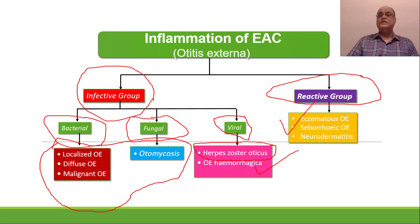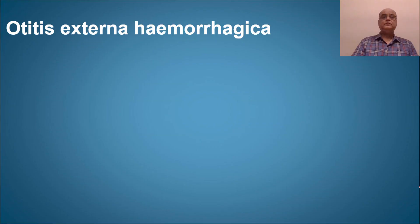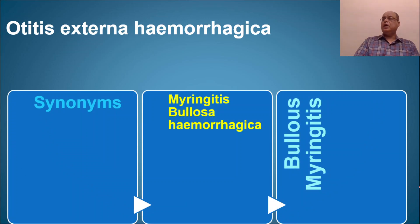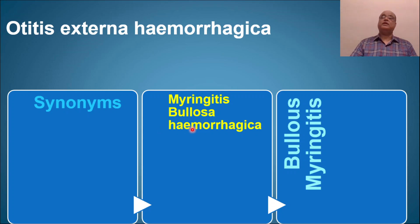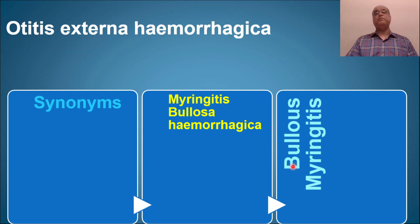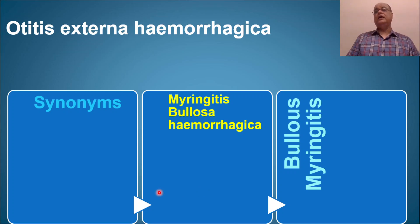Today we will discuss otitis externa hemorrhagica. It is also known as myringitis bullosa hemorrhagica, or simply bullous myringitis. The word 'hemorrhagica' is significant and should be kept in mind. Myringitis refers to inflammation of the tympanic membrane, and 'bullous' refers to the vesicle or bulla formation present. All three names are used synonymously.